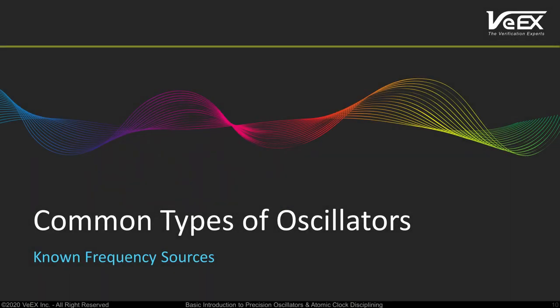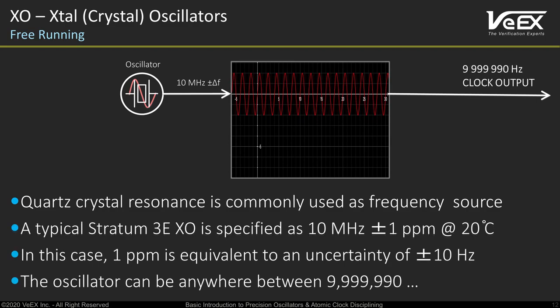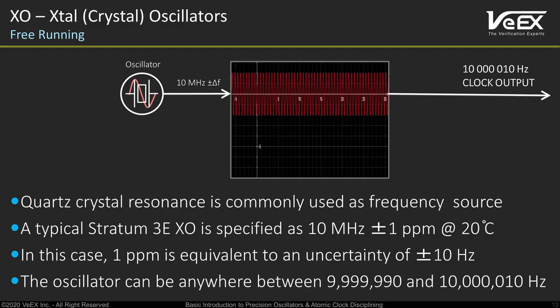Let's take a quick look at some common types of oscillators and get familiar with terminology and acronyms. Starting with the most common type, the quartz crystal oscillator — on its own it doesn't qualify as a precision frequency source, but it is an important building block for modern clocks. A modern stratum 3E quartz oscillator may have a typical specification of 10 MHz ±1 ppm at 20°C, that is somewhere between 9,999,990 Hz and 10,000,010 Hz — a lot of uncertainty. From the time point of view, 1 ppm is equivalent to gaining or losing 1 microsecond every second, which is not good. These days we prefer to see inaccuracies in the order of parts per trillion.